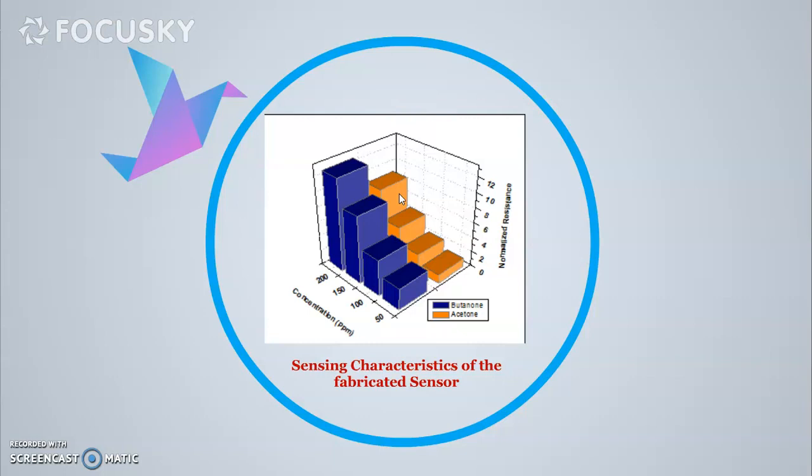The main aim was covered through sensing characteristics. Sensing characteristics were performed in the indigenously designed and developed dynamic gas sensing setup. Here you can see what we have done. We applied the constant current, 10 microampere.